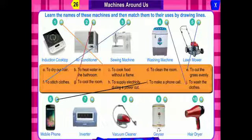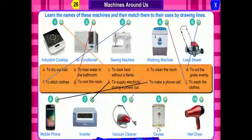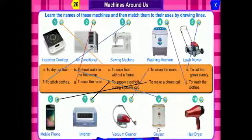Number 7 is inverter. We use inverter to supply electricity during a power cut. Number 8 is vacuum cleaner. Why do we use a vacuum cleaner? To clean the room. Number 9 is geyser. We use a geyser to heat water in the bathroom in winter days. Next is hairdryer, number 10. We use a hairdryer to dry our hair.